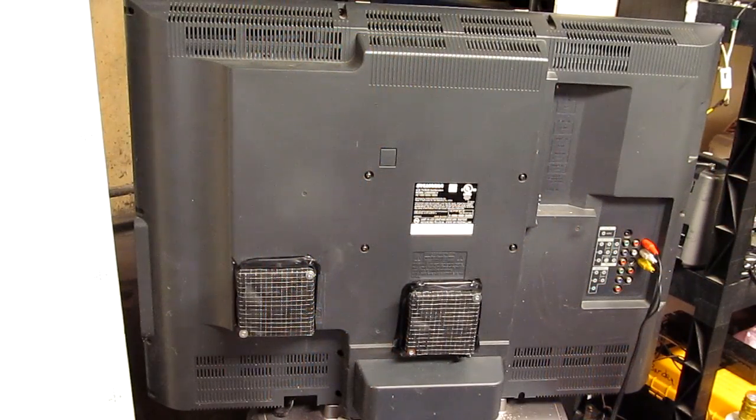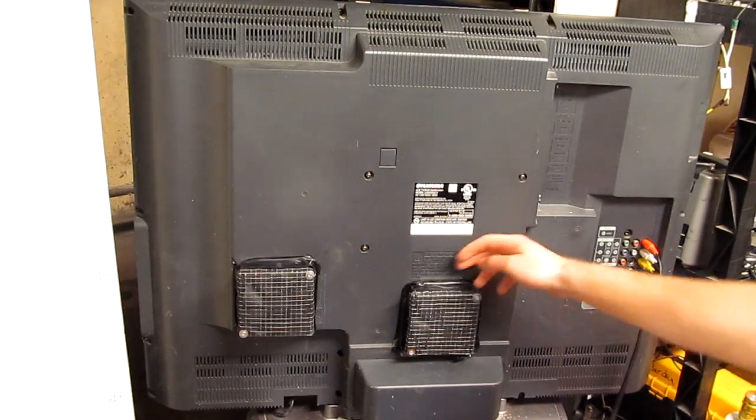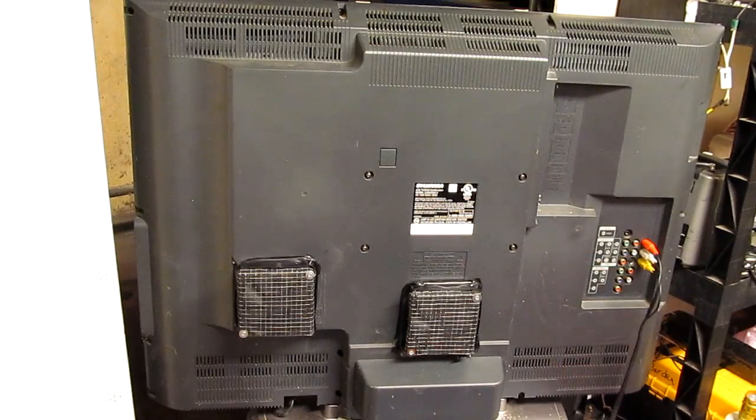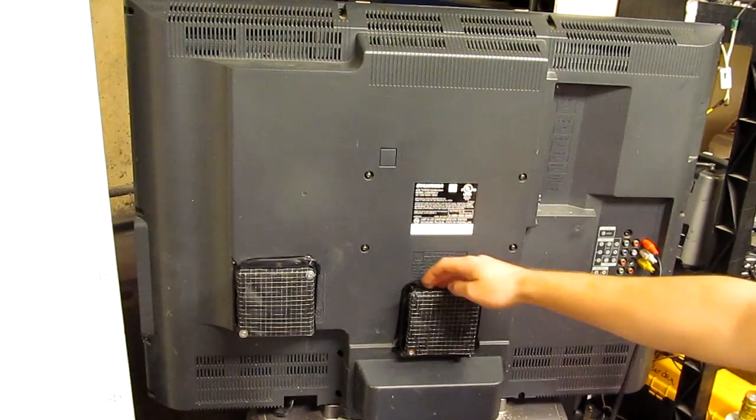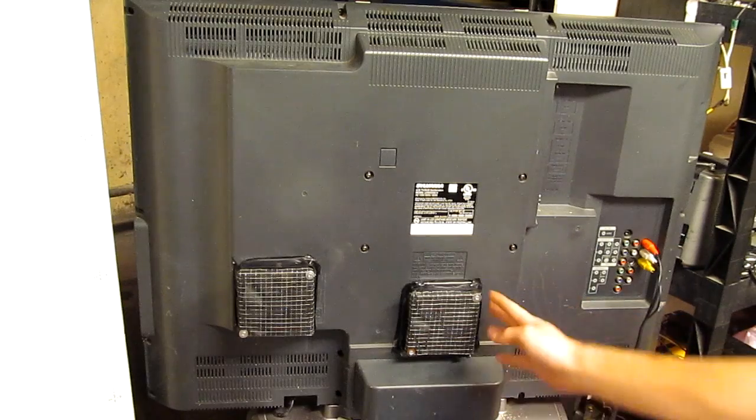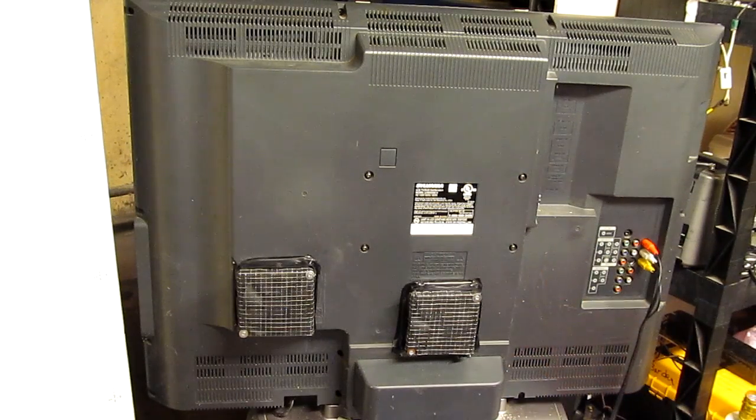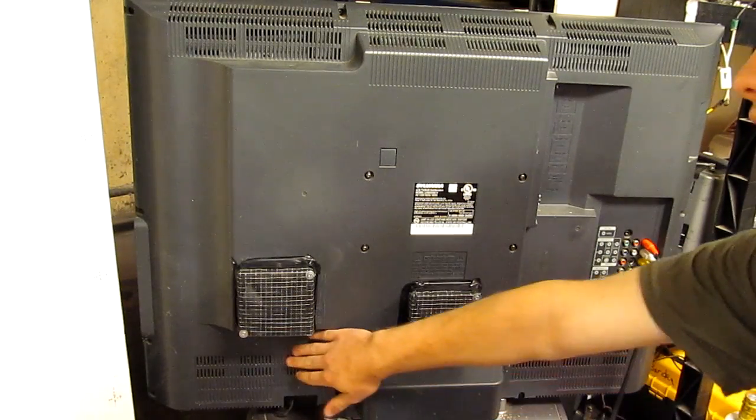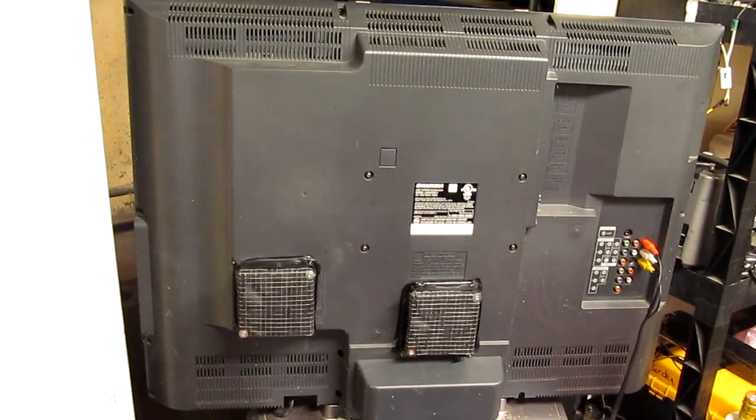There we are, the TV is all put back together. Fans are clamped on, got little silicone pads under the corners for noise isolation, tape around them so the air goes mostly inside the TV, and I've selectively blocked some of these lower vents so more of the air goes up. Contact.